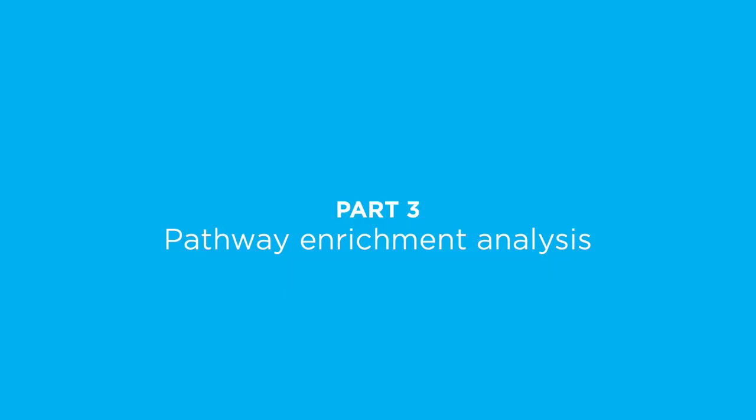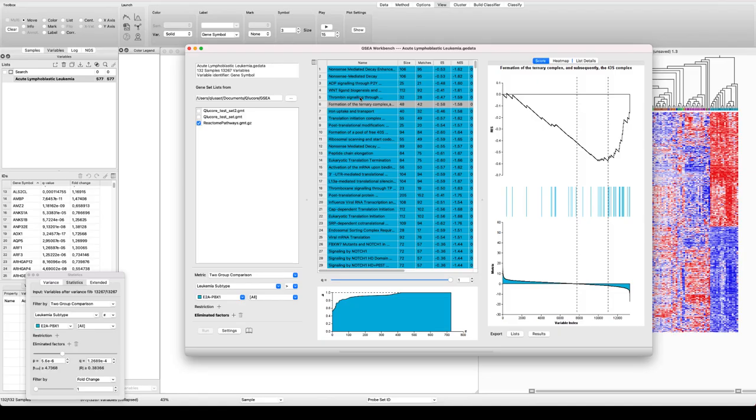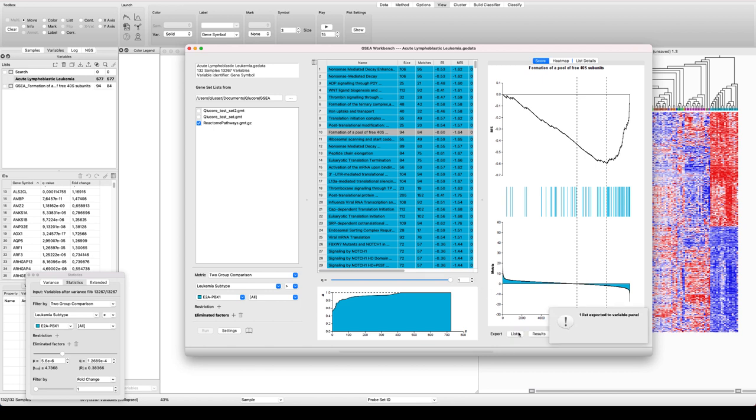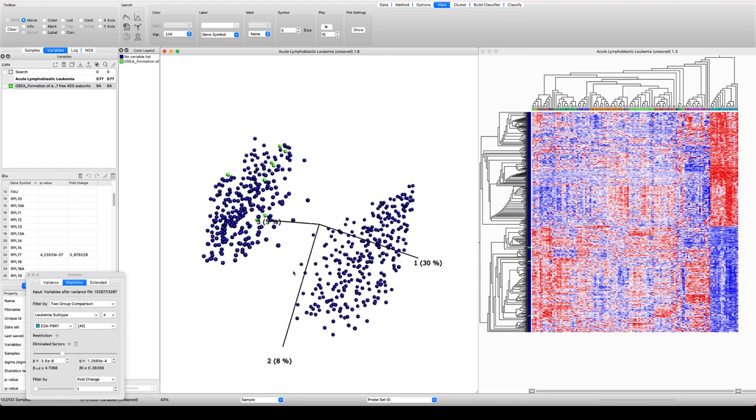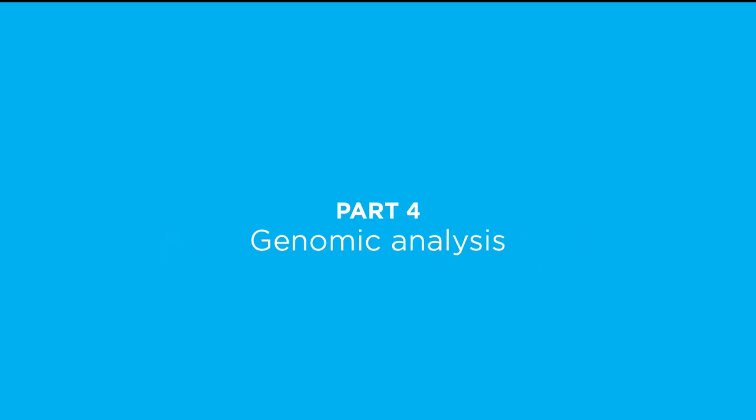The results from the statistical test can be further analyzed in a biological context. In Qlucore Omics Explorer, there are many ways to do this. One example is to use the GeneSet Enrichment Analysis Workbench. Here, we have performed a GSEA analysis and identified enriched pathways. Pathways of interest can be further investigated and visualized in the main plot window.